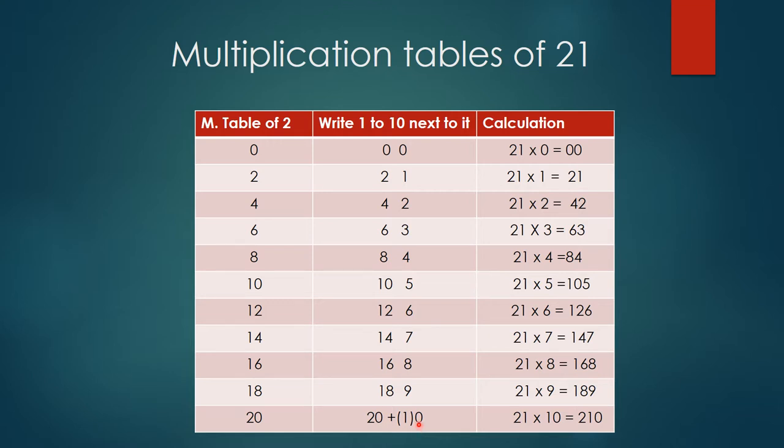So what we need to do is express that 0 over here, and the previous number 1 needs to be added to 20. So 21. So you get the table of 21.